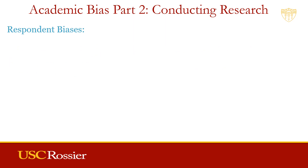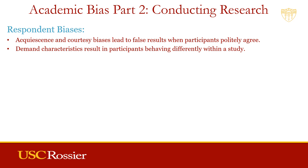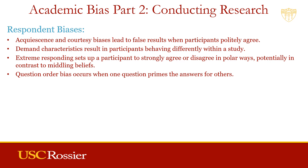There are multiple respondent biases. Here are some. Acquiescence and courtesy biases lead to false results when participants agree out of politeness and often based on how the question or situation were set up. Demand characteristics result in participants behaving differently within the study. The participants change their behavior to match what they think is expected. Imagine participants code switching for the study. Extreme responding sets up a participant to strongly agree or strongly disagree in polar ways rather than sharing their true beliefs in the middle. Be careful with how you set up Likert scales. Question order bias occurs when one question primes the answers for others.